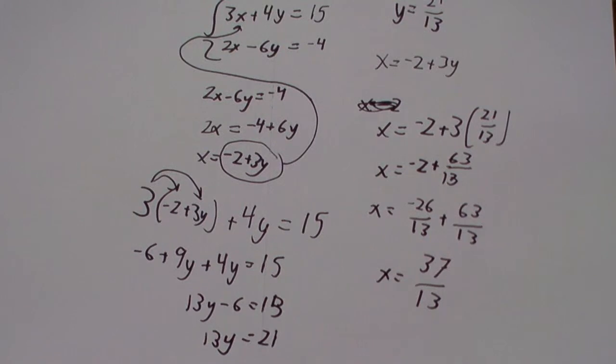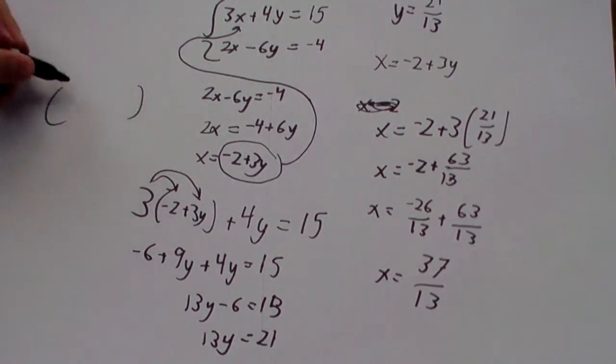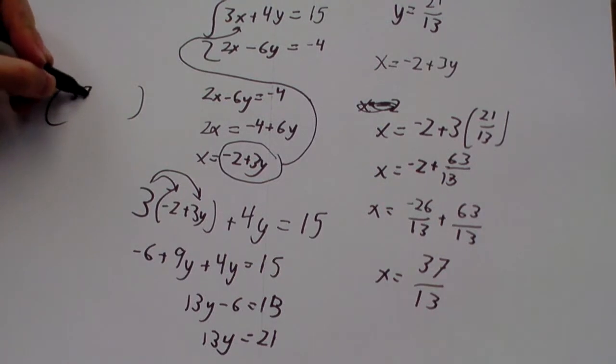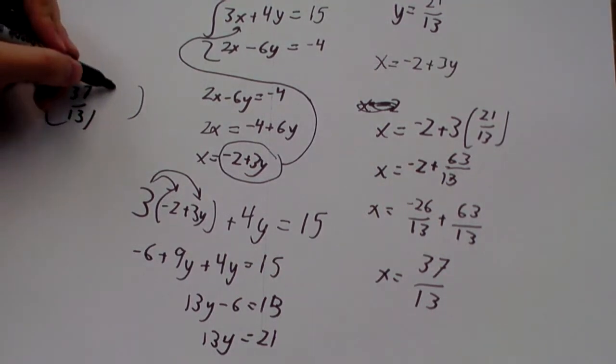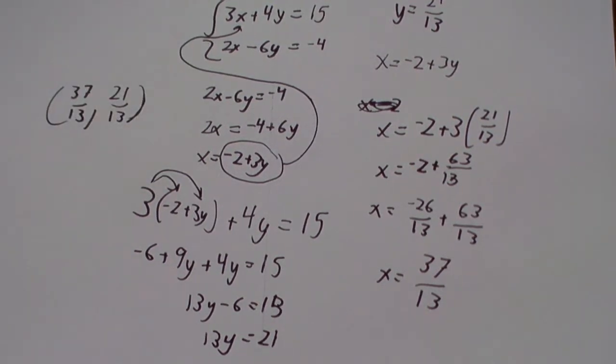And we can write our solution up here. I'll just put it here since there's lots of space. As 37 over 13, 21 over 13. And that's our solution right there.